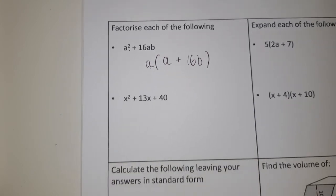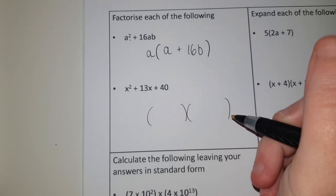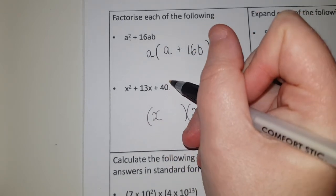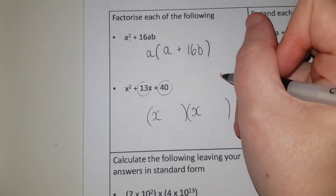If I look at the next one, I want two brackets because there's three terms altogether and now both my brackets are going to start with an X. So I want two numbers that multiply to make 40 but add to make 13.